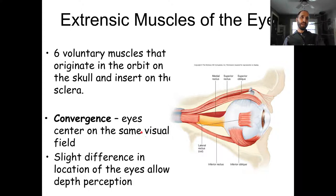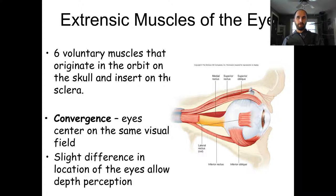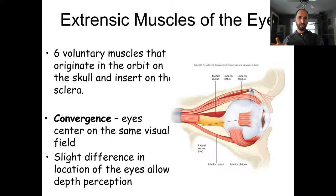Depth perception is complex — multiple factors contribute. Our experience of the world means we know the relative size of things: if we see a cat in the distance, we know how big cats are and can estimate how far away it is by how small it looks. Looking at multiple objects gives us an idea of relative depth. Another factor is the difference between what our two eyes see.